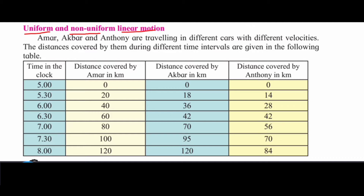Amar, Akbar, and Anthony are traveling in different cars. The velocity in each car is different, and the distances covered by them during different time intervals are given in the following table.